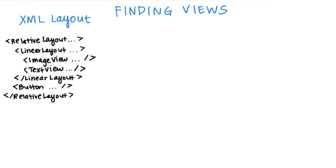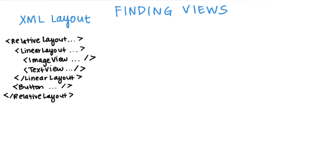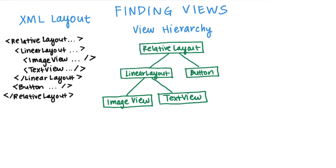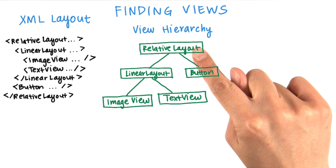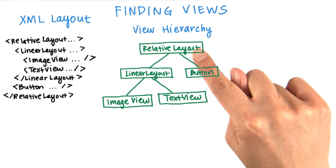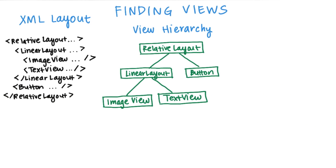The system takes and inflates layout XML files and turns them into a full view hierarchy, with the root layout of the main activity at the very top of the view tree. We can also assign IDs to each view in the tree, but it's not required if you don't need a reference to an individual view.